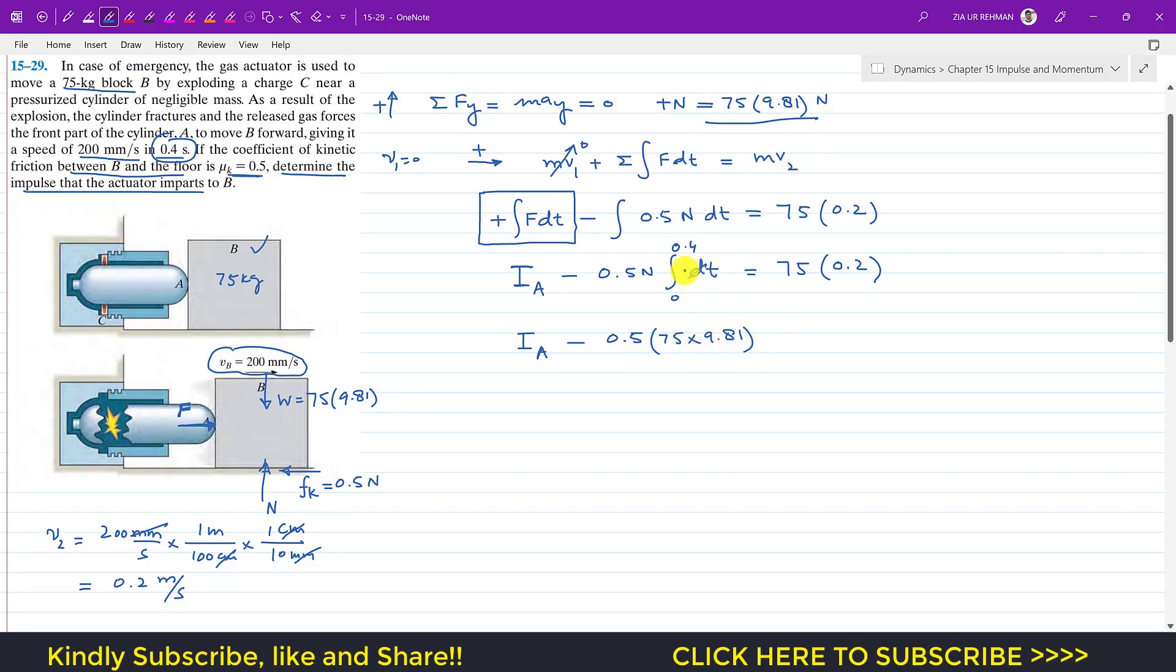This gives us t from 0 to 0.4, which equals 75 into 0.2. If we put this limit, we get 0.4 minus 0, which is 0.4. If I bring this whole term to the other side of the equation, it becomes positive.